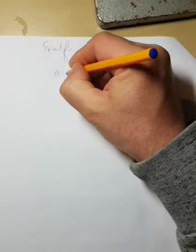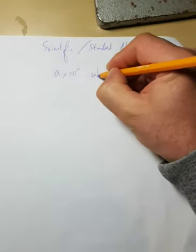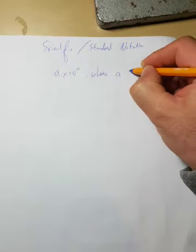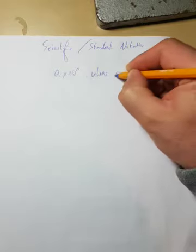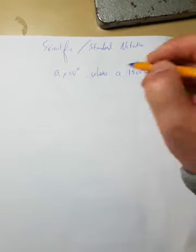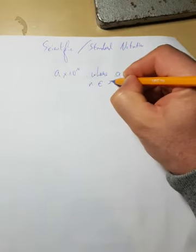In this video I'm going to discuss the topic of scientific or standard notation. This is a method we use in maths and science to write really big or really small numbers in a way that we can read easily. All scientific notation is in the form a × 10 to the power of n, where a is greater than or equal to 1 and less than 10.